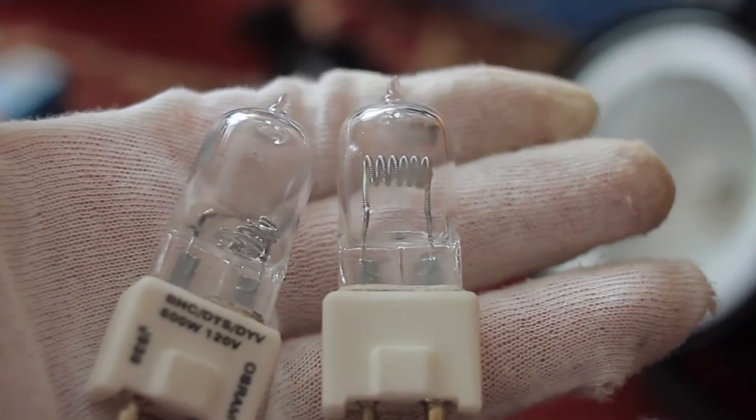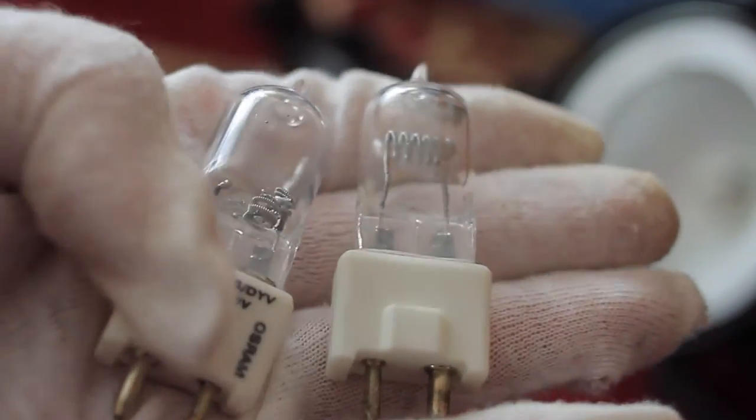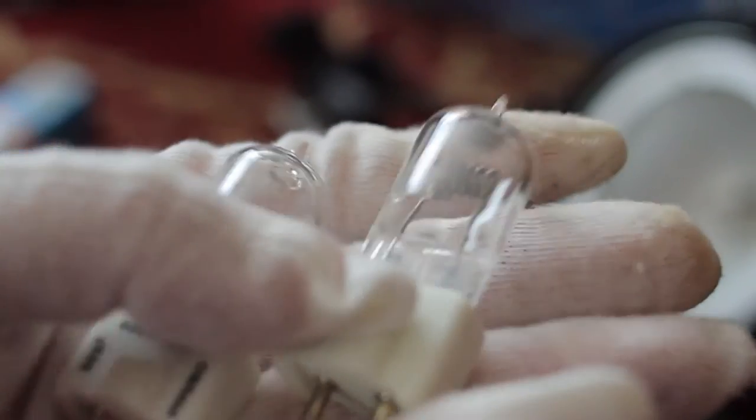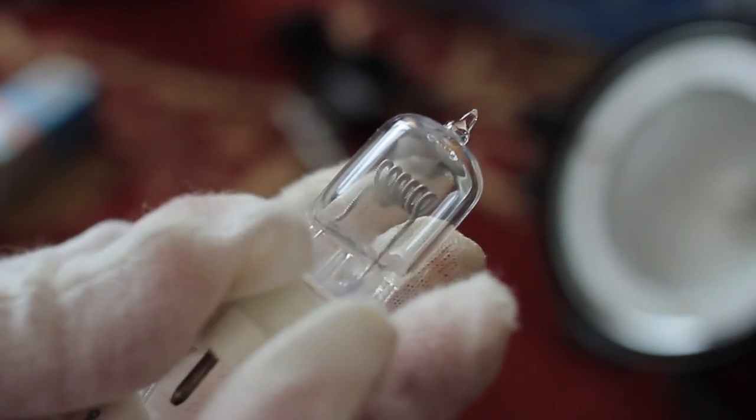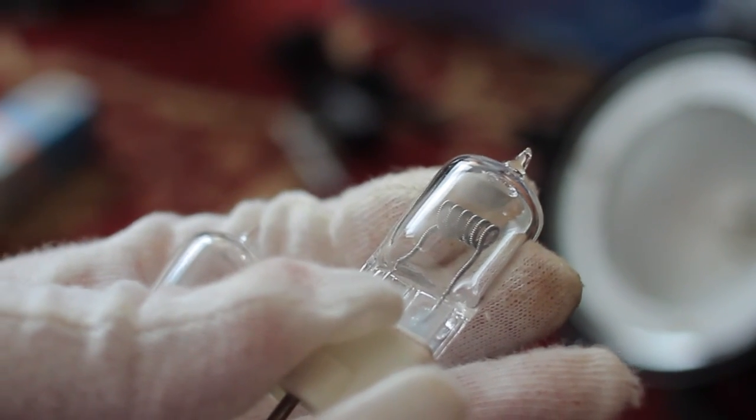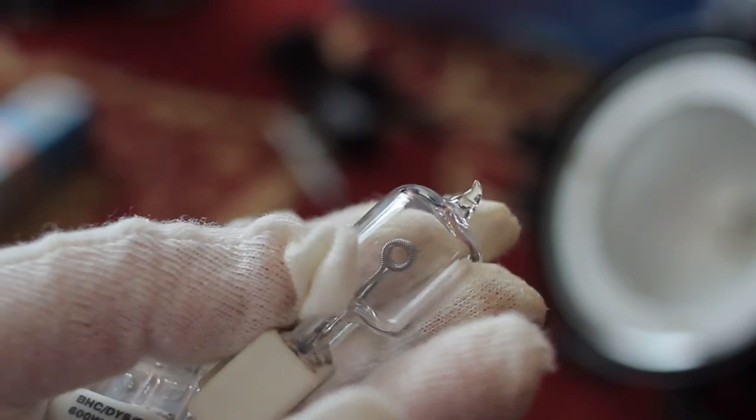I went ahead and changed out the bad bulbs on all my instruments. And here's what the bad bulbs look like. Sometimes it's just a very faint mark on the side of the bulb. And the coil is intact here.